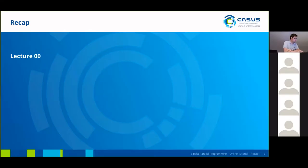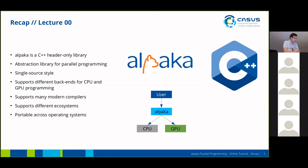On the first day we looked at Alpaca from a very high level point of view. We learned that Alpaca is a C++ header-only library, which means there are no bindings for C or Fortran, for example. Alpaca is also an abstraction library for parallel programming which enables you as the user to write one code and run it on both CPUs and GPUs. Alpaca follows the single source coding style, so there is no separation between kernel code and the rest of the program, and Alpaca supports different backends for CPU and GPU programming.